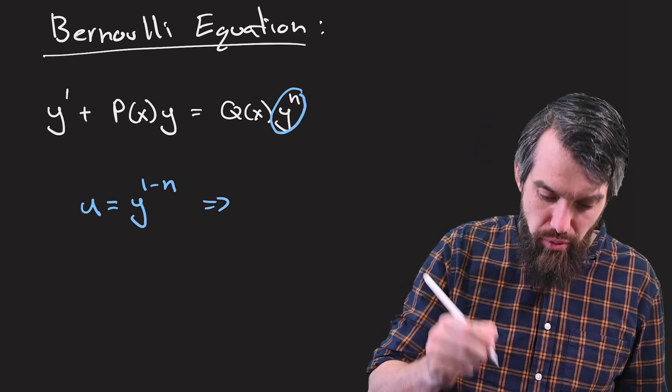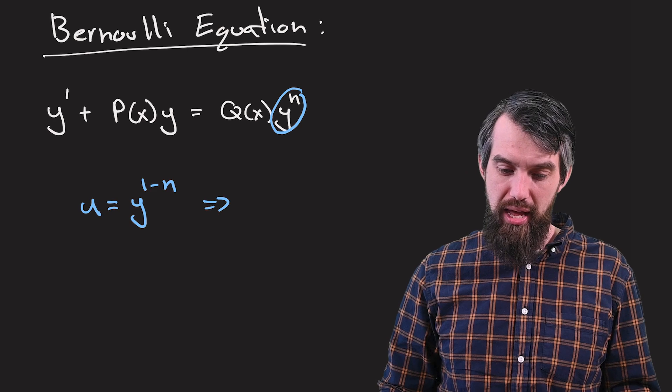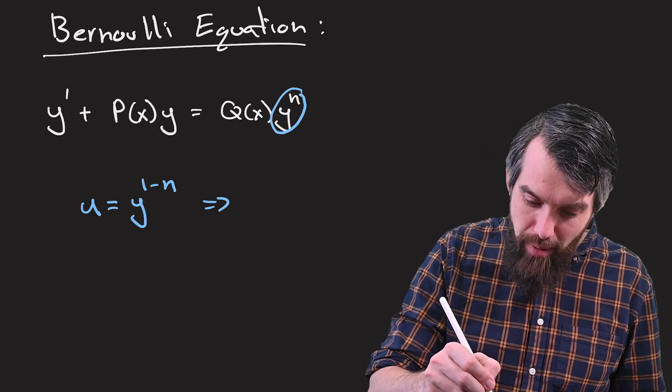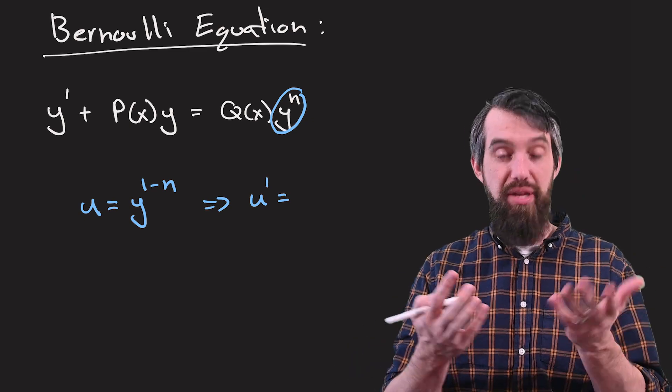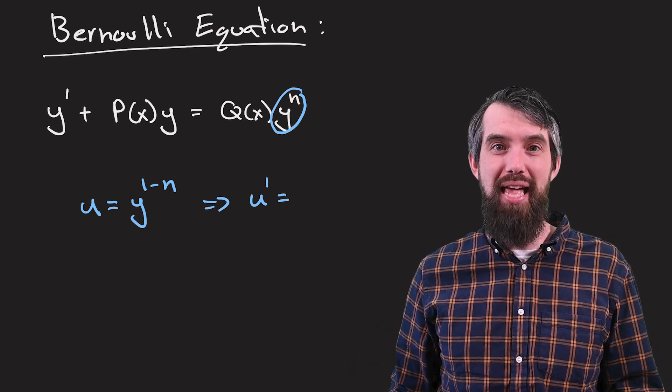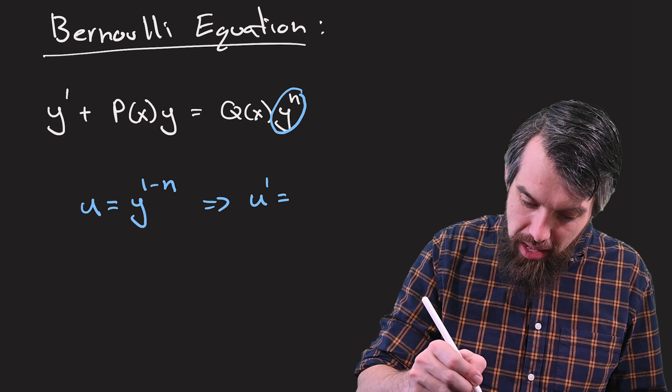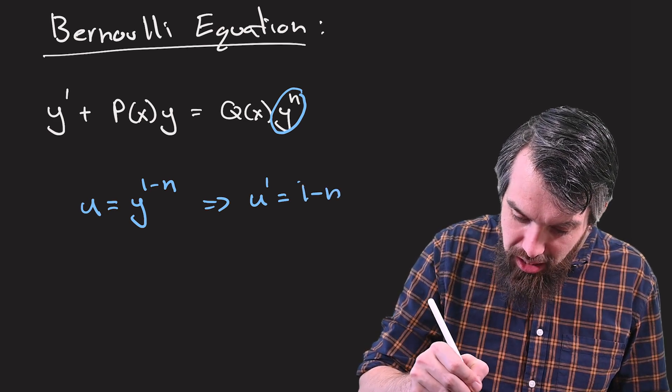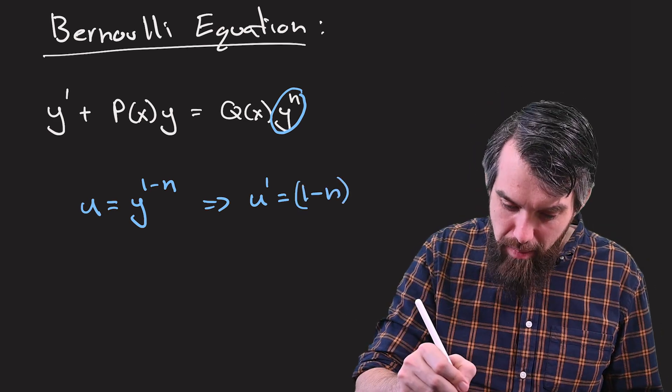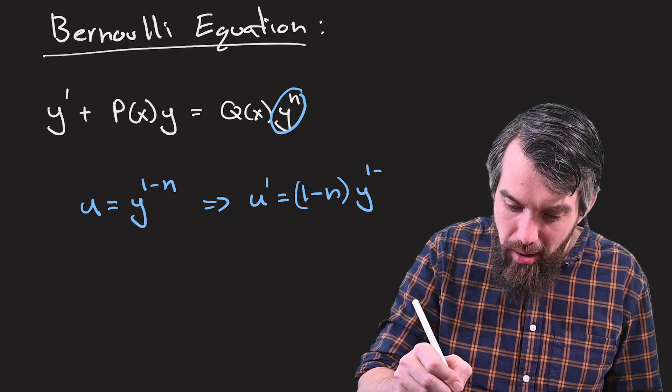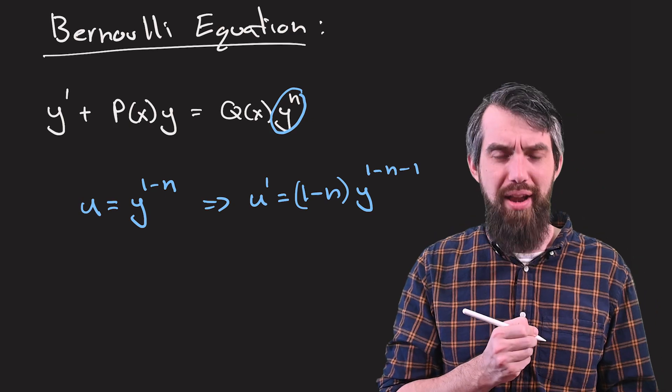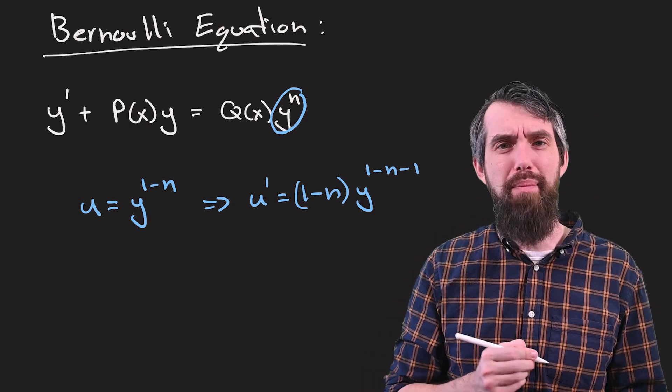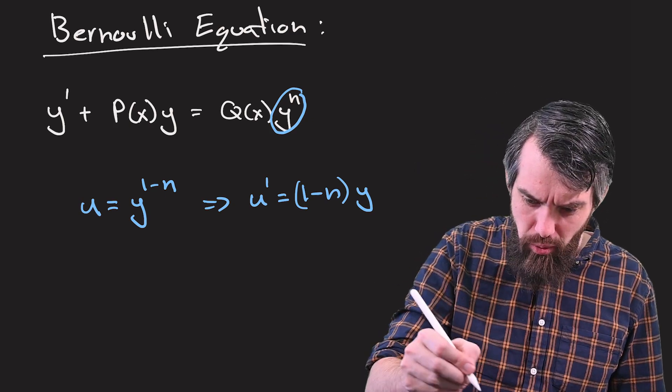So what I want to be able to do, u and y are both functions of x, is I want to make some claim about what u prime is going to be. Well, indeed, this is going to be the derivative of y to the 1 minus n. And that I can do by chain rule. So this is going to be 1 minus n is going to come out the front. And then this is multiplied by y to the 1 minus n, but one less than that when you take the derivative, so minus 1. And perhaps instead of writing 1 minus n minus 1, I'll just write minus n. And then multiplied by y prime.